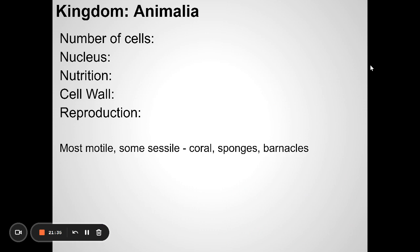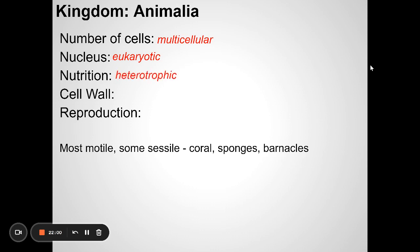Now we have animals. Unicellular or multicellular? Multicellular. Prokaryote or eukaryote? Eukaryote — they do have a nucleus. Autotroph or heterotroph? Heterotroph — they have to eat other things to get energy. Do they have a cell wall? No. Do they reproduce sexually or asexually? Mostly sexually, though some animals can reproduce asexually.